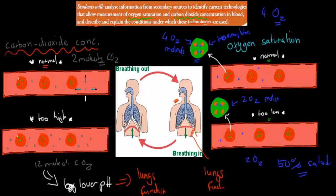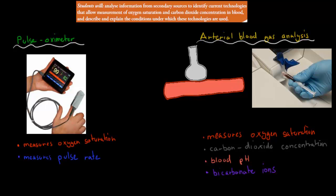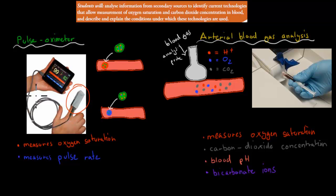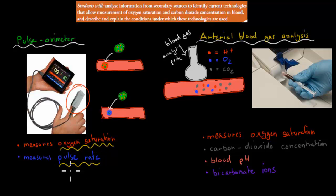Now I'll cover the actual technologies. The first one is called the pulse oximeter — you need to remember these names because the dot point says identify current technologies. You might have seen this before: it's when someone has one of those clips on their finger. What it's doing is measuring two things: the oxygen saturation levels — how much oxygen is in the blood — and also the pulse rate, which is similar to heart rate. It gives us a scope of how well the heart is working and how much oxygen is in our system, helping us check if our lungs and circulatory system are working properly.